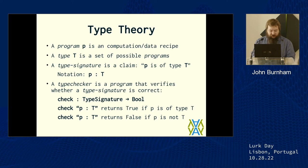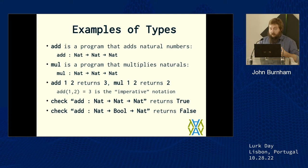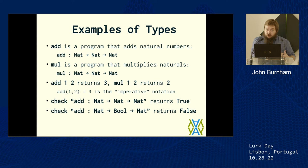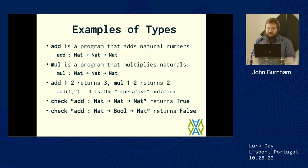Here are some simple examples. Addition and multiplication both take two natural numbers and return a natural number — the same type, different implementations. If we try to claim that addition takes a boolean — like 'add1 true' — then a good type checker should say no, that doesn't make sense. In some type systems you can do this with coercion, but we're pretending that doesn't exist for now.